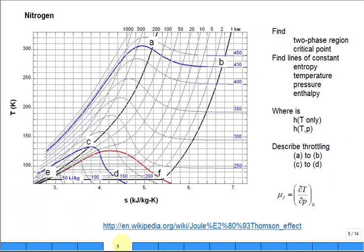Here's a plot I grabbed off of Wikipedia, and it's for the substance of nitrogen. So it's looking at a temperature, entropy diagram for nitrogen.